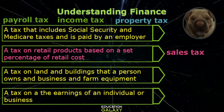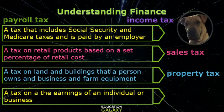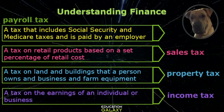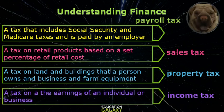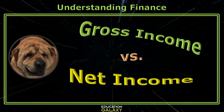I'll take property tax. A property tax is a tax on land and buildings that a person owns, and business and farm equipment. I'll do income tax next. Income tax is a tax on the earnings of an individual or business. And last but not least, I'll do payroll tax. It's a tax that includes Social Security and Medicare taxes and is paid by the employer. Very good.